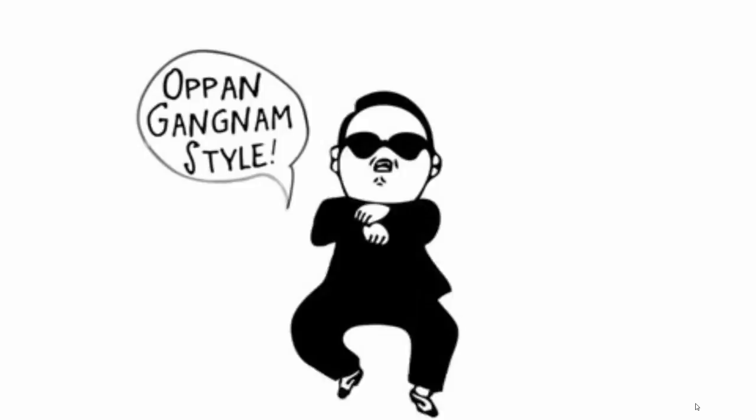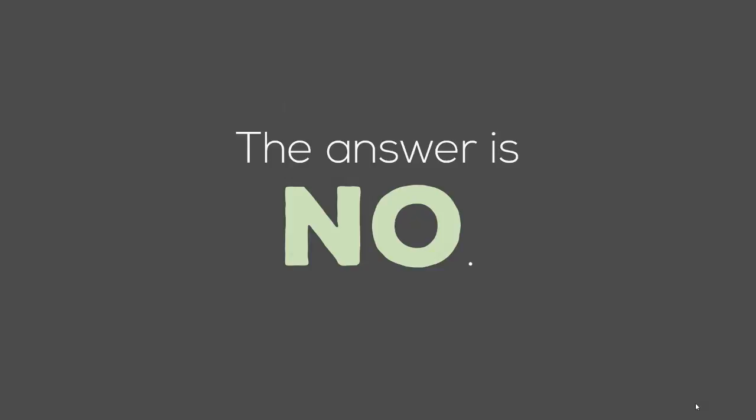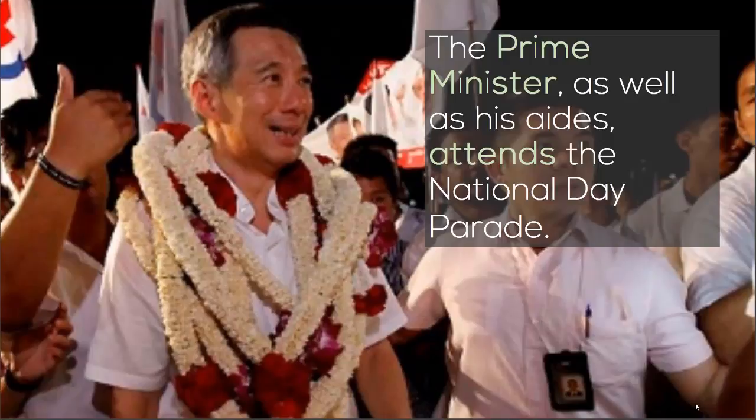Do the following items add to the number: with, as well as, and together with? The answer is no. For example: the prime minister, as well as his aides, attends the national day parade. The phrase as well as his aides is redundant and doesn't add to the number. We refer to prime minister, which is singular.